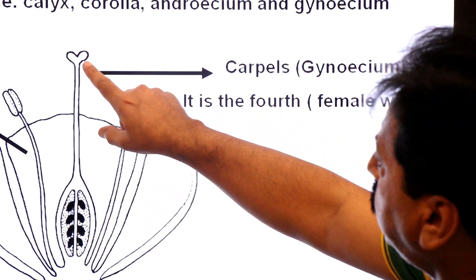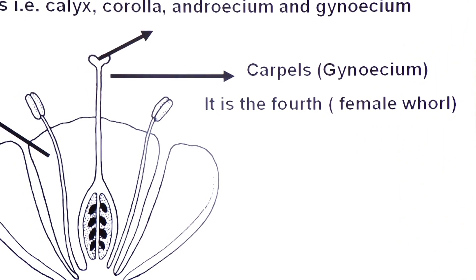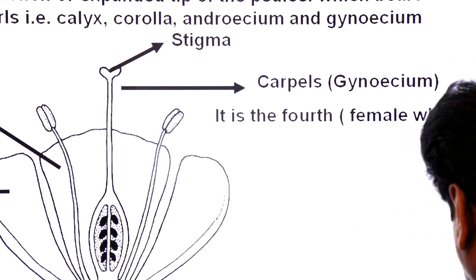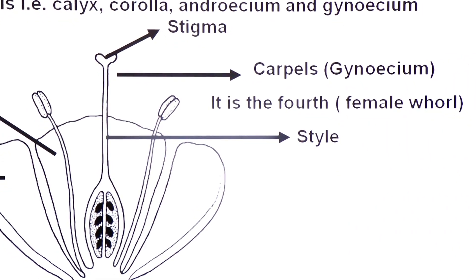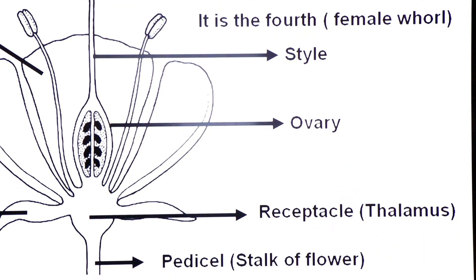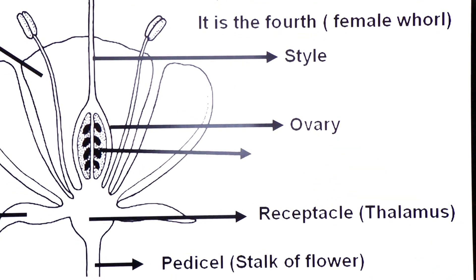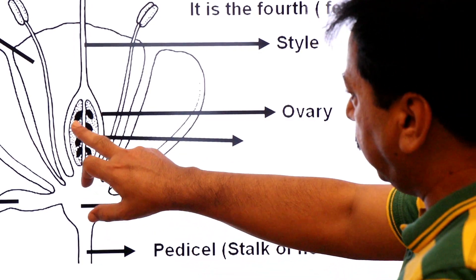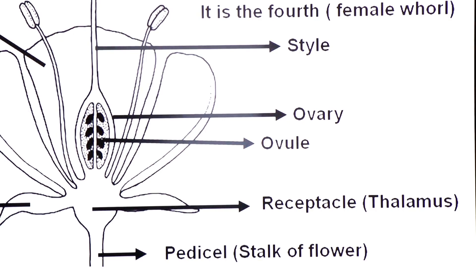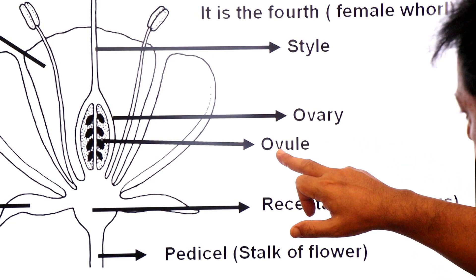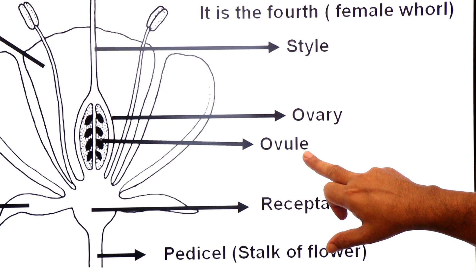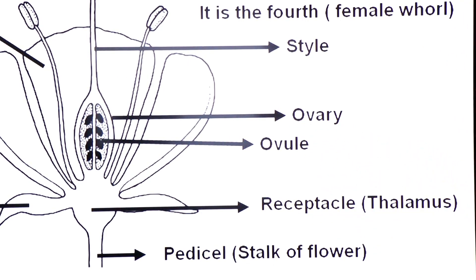The top of the carpel has a sticky knob known as stigma. Then there is a long tube-like part known as style. Style leads into an ovary. After fertilization, ovary changes into fruit. Inside the ovary there are ovules, and after fertilization ovule changes into seed. That is why they produce seeds within fruit - ovule develops into seed and ovary develops into fruit.